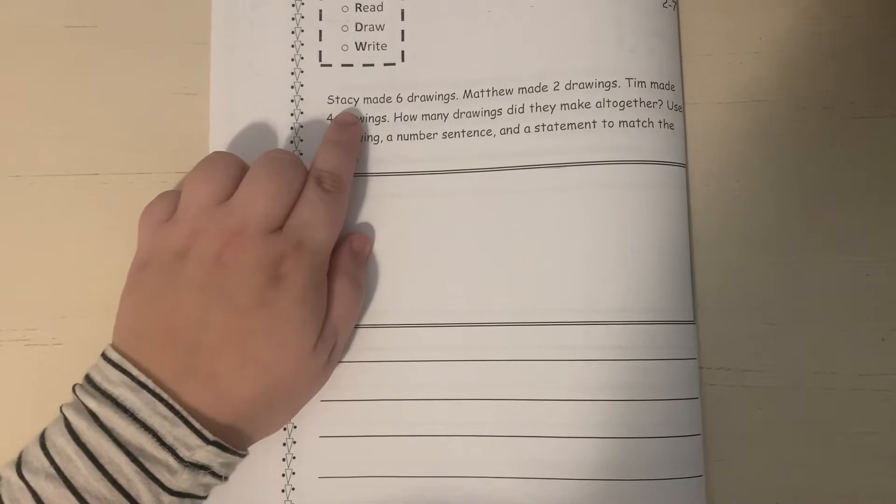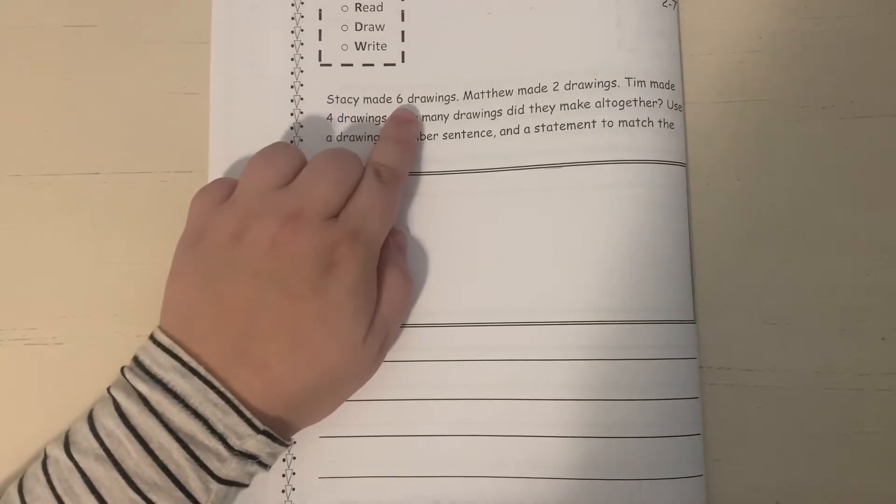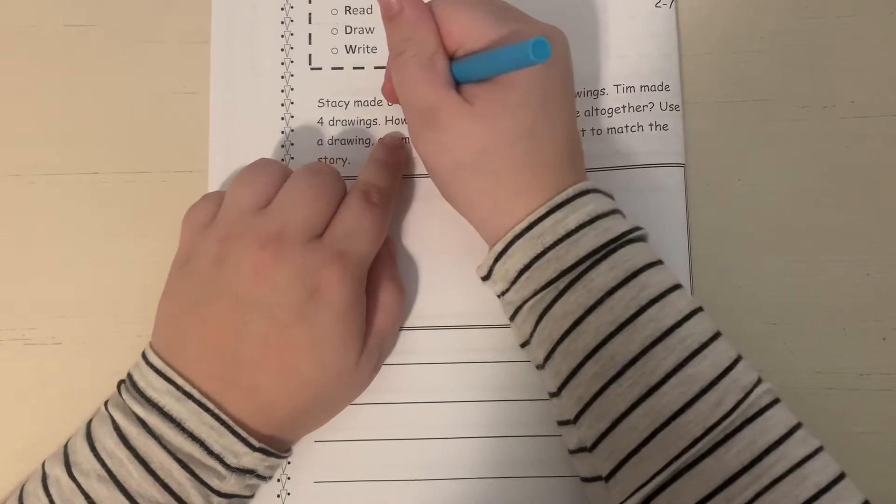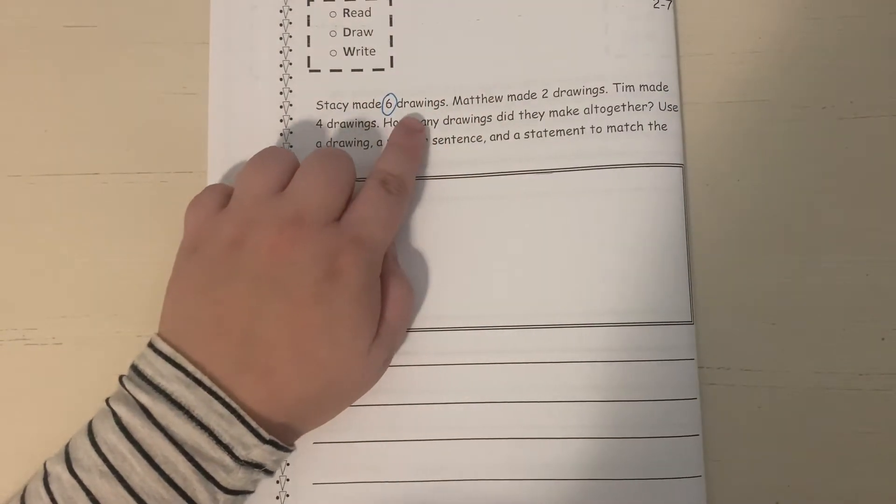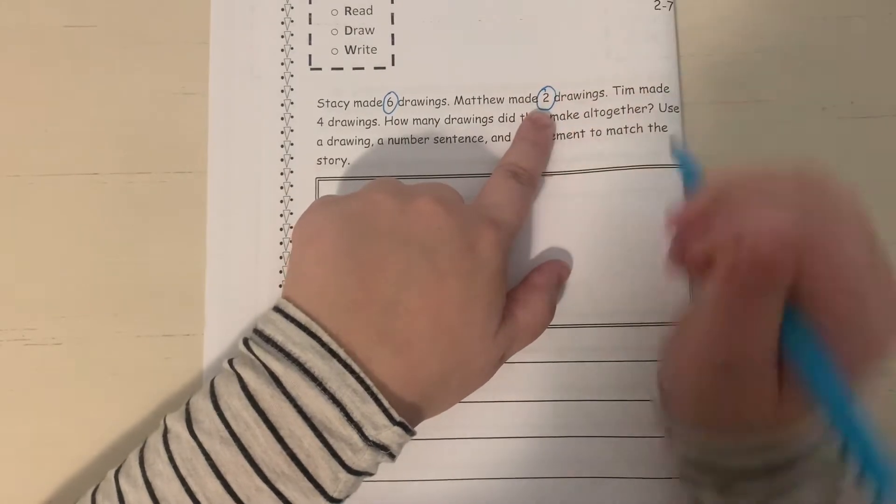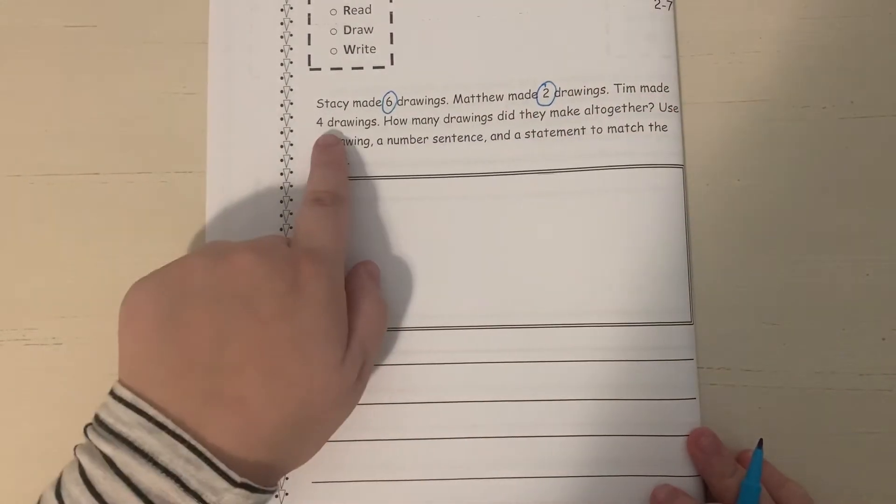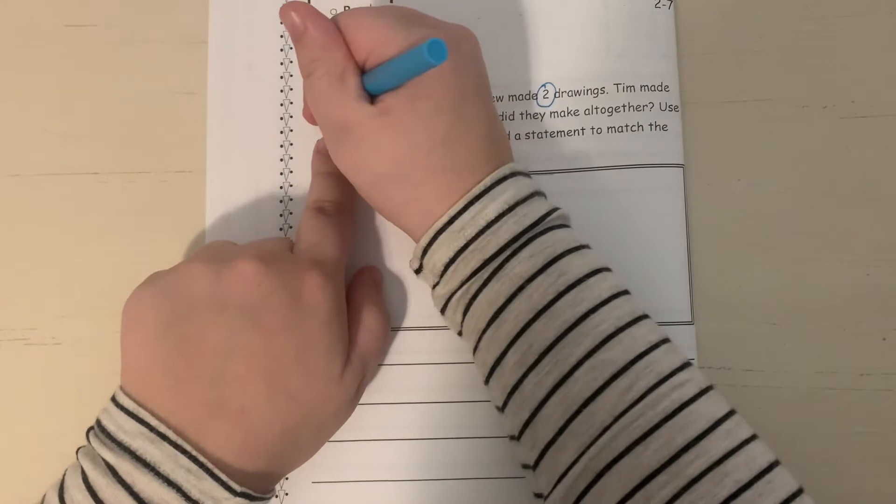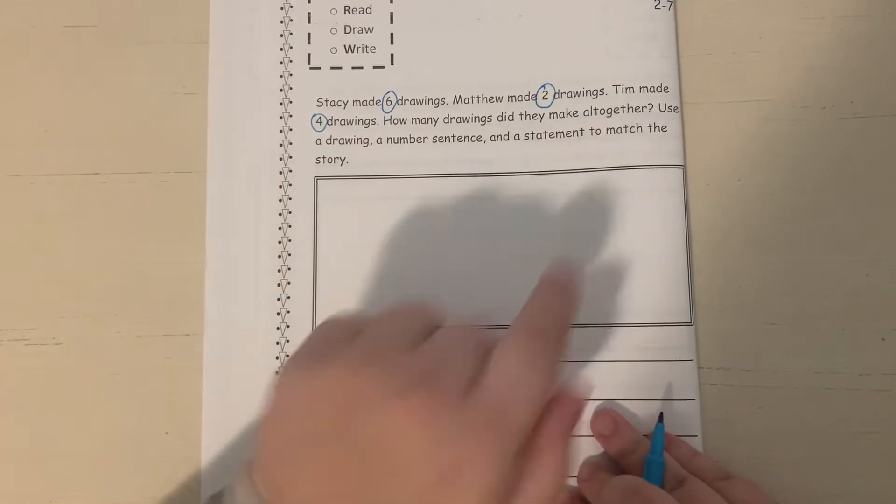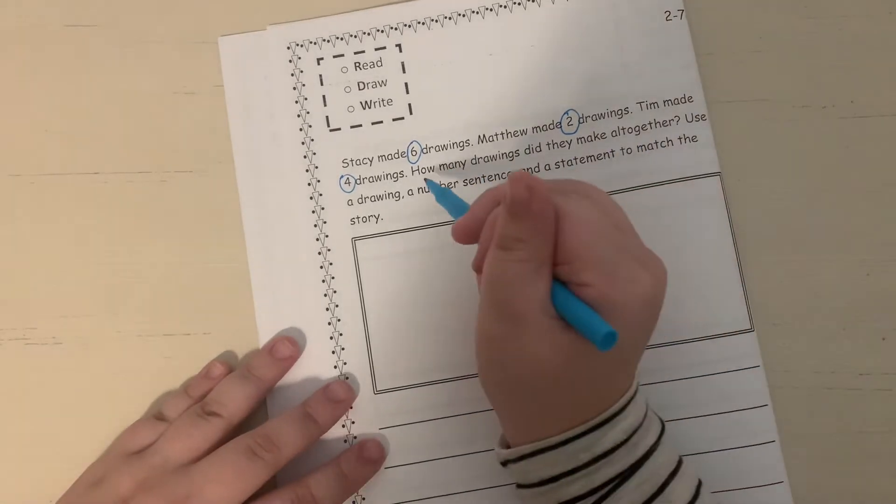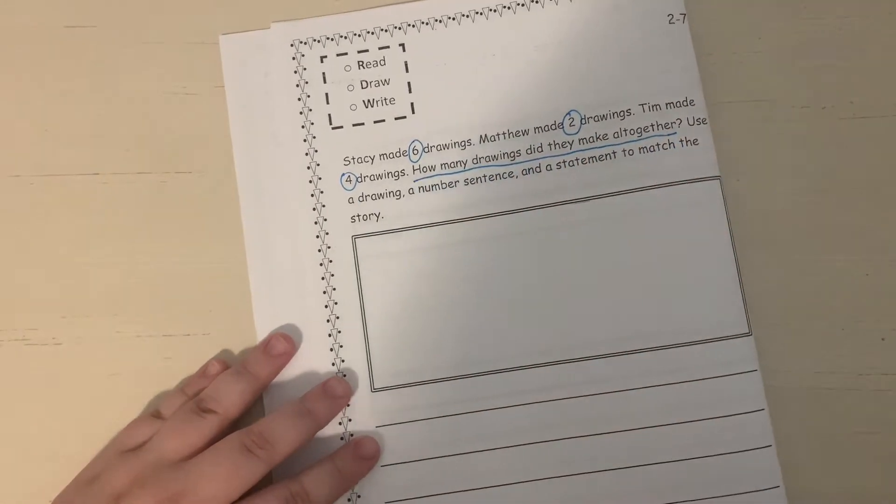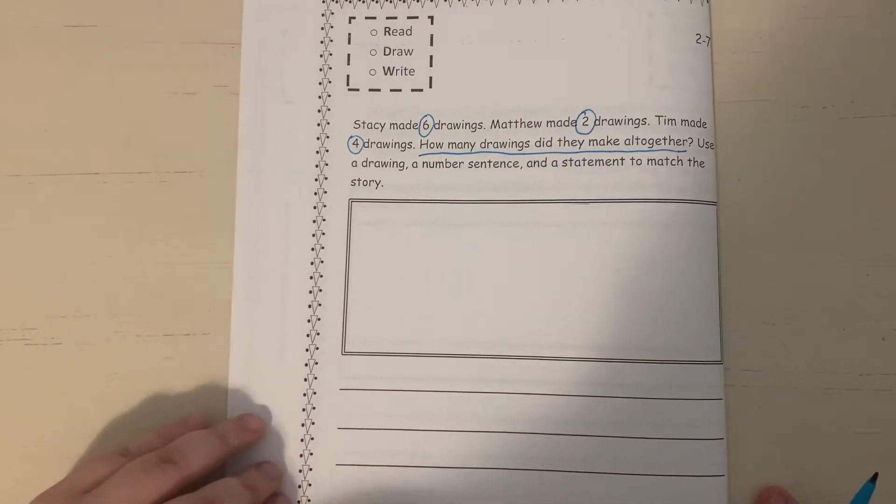It says Stacy made six drawings. And remember, we're going to circle numbers as we go. So she made six drawings. Matthew made two drawings. Tim made four drawings. How many drawings did they make all together? We're going to underline that question because that's what we're trying to figure out. How many drawings did they make all together?